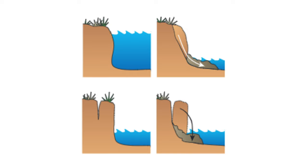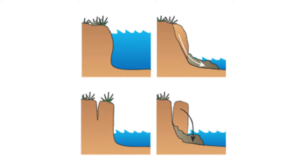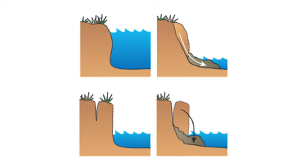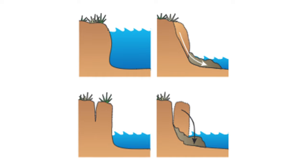Depending on the conditions and materials, the top part of the bank will then either slip down feet first — called slumping — or topple overhead first, called sloughing. The other factor that can cause slumping is when the bank materials are saturated after being inundated with water, and there's a drawdown effect as the force of gravity pulls or sucks the water down and pulls the bank material with it. This can happen periodically with flooding or daily with tides.